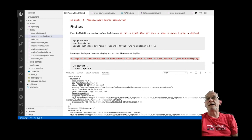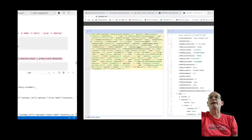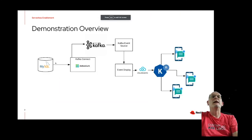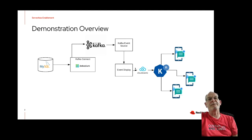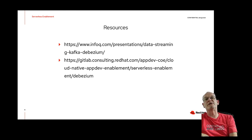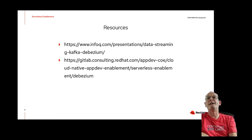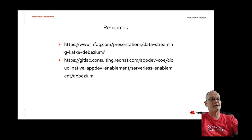So that's effectively the full demo. When making any changes to MySQL, Debezium puts those on Kafka, Kafka triggers the Kafka event source, which triggers the Knative event-display application, which outputs a CloudEvent object. For more information about Debezium, check out that talk by Gunnar Morling — it's really good. And check out the GitLab repo which has everything I've gone through today to set up in your own cluster. Thanks very much.